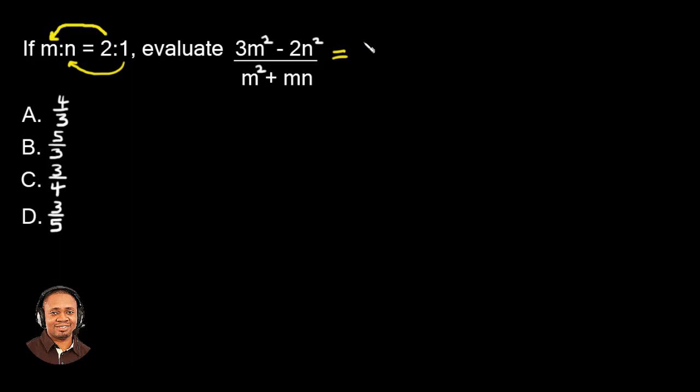So this is what we're going to have now. The numerator where we have 3m squared, we are going to interchange the m with 2, so we have 2 squared. Then, still at the numerator where we have 2n squared, the n now is 1, so we have 1 squared. Now, going to the denominator, m squared, which we have m as 2, so we have 2 squared, plus mn, that is 2 times 1.